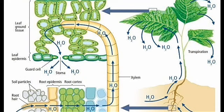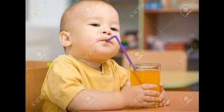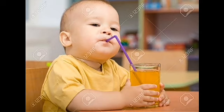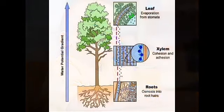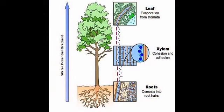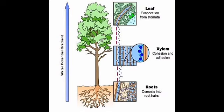Have you ever observed, while sipping a cold drink with a straw, you pull up the column of drink held in the straw by suction pull? The same mechanism works here. The water column in the xylem vessel held by cohesion and adhesion forces needs force to pull it up to great heights. This is accomplished by transpiration pull.